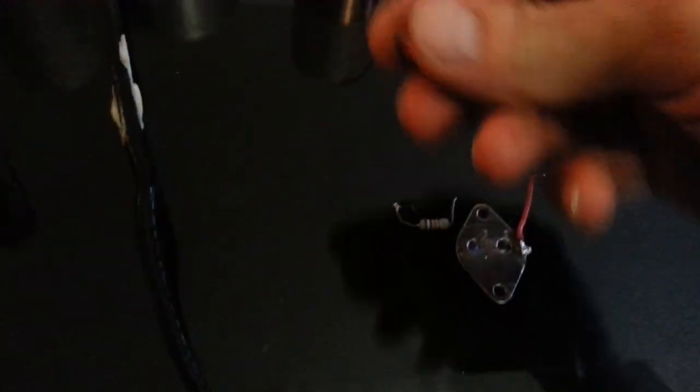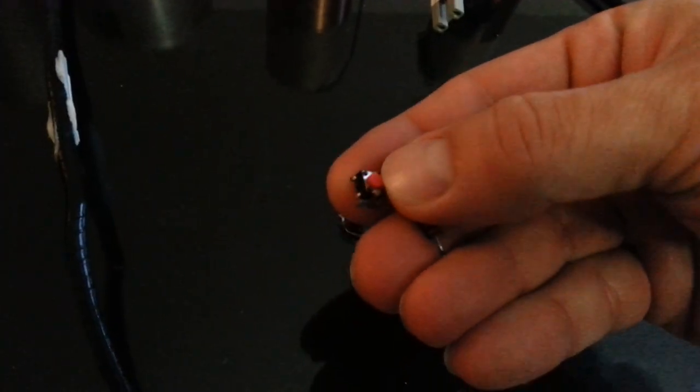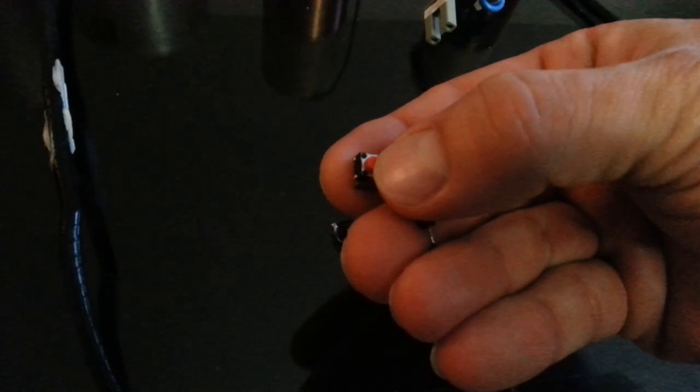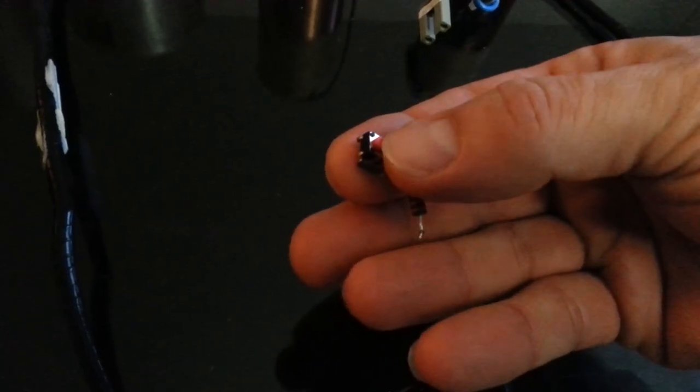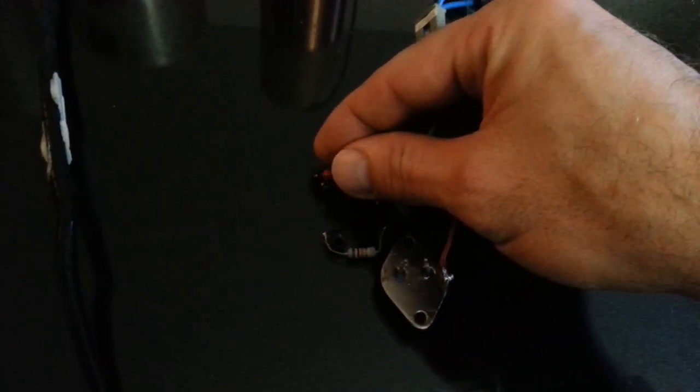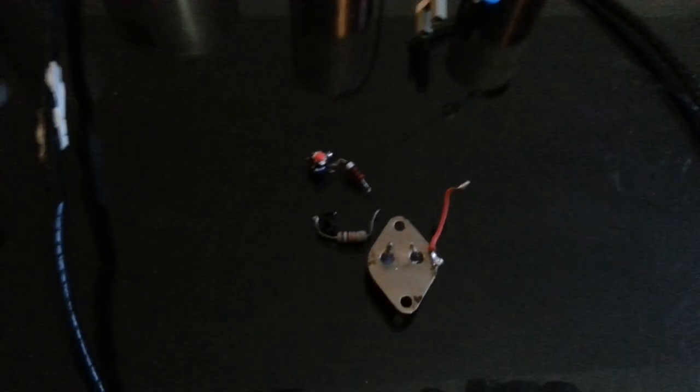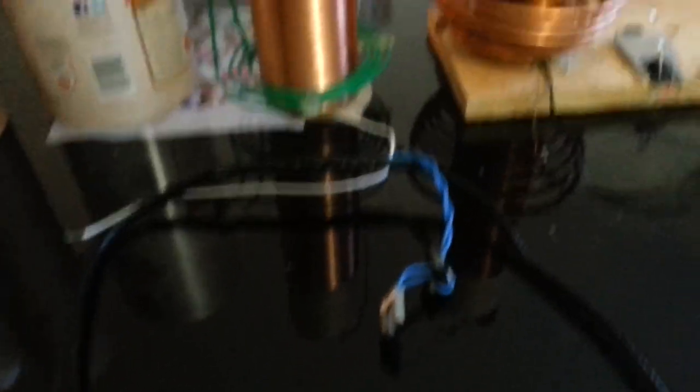And then I just, for the little switch, I just have a nice little clicker button. It's just a momentary switch. Just whenever you push it down, it turns on. When you let off, it goes into resonance mode. So there's not a whole lot to the circuit to get this thing self-oscillating.